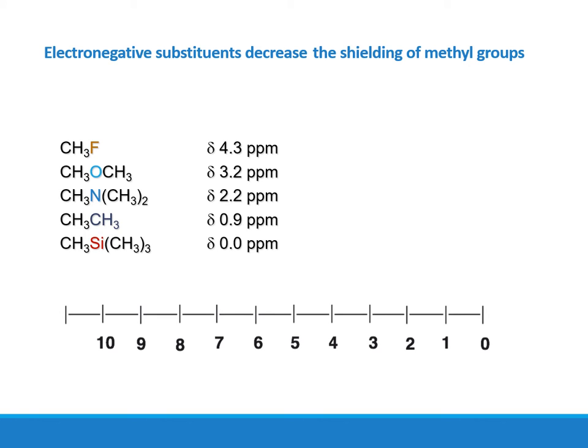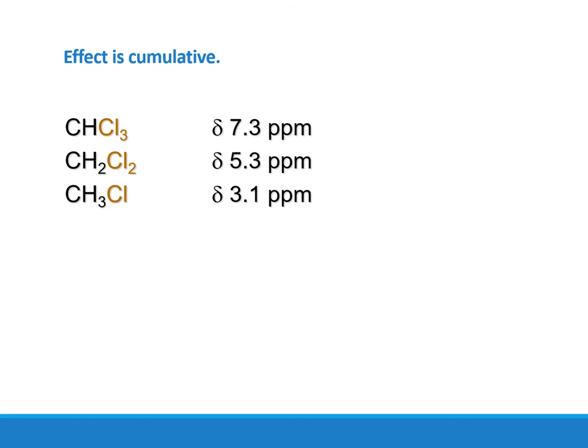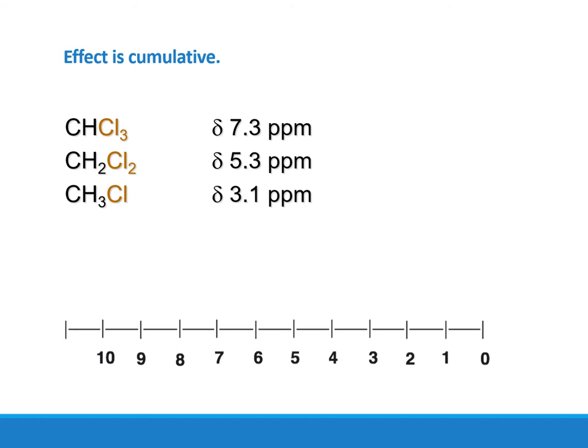Electronegative substituents decrease the shielding of nearby protons. We have a series of atoms with different electronegativities, and the higher the electronegativity, the more the PPM values shift toward the downfield region of the spectrum. The effect is cumulative — for example, with one chlorine versus three chlorines, the electronegativity of the atoms adds up and moves the signals to more downfield environments.